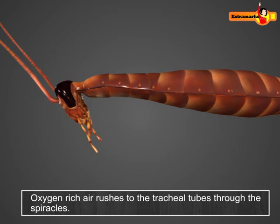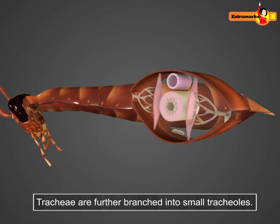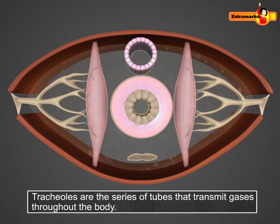During the process of respiration, oxygen-rich air rushes into the tracheal tubes through the spiracles. These trachea are further branched into small tracheoles, which are a series of tubes that transport gases throughout the body. Oxygen diffuses into the body tissues from the tracheoles and finally gets absorbed by all the cells of the body.